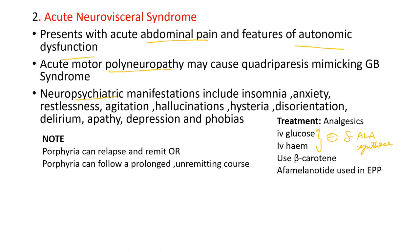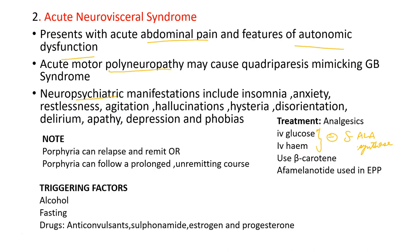Porphyria presentation can be relapsing or remitting, or may follow a prolonged unremitting course. Triggering factors include drugs like anticonvulsants and sulfonamides, and it may also be triggered by alcohol or fasting.